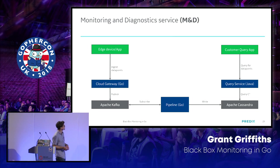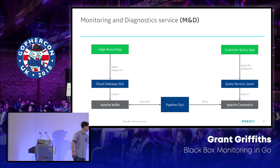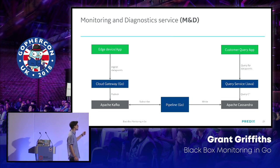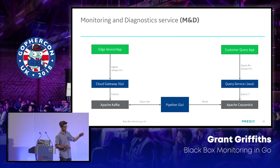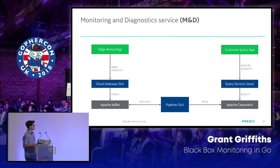The service architecture has a cloud gateway written in Go that sends messages to Apache Kafka. We subscribe to that topic with our pipeline application service, also written in Go, which writes to Cassandra. We also have a query service written in Java that queries data points from our Cassandra cluster. I'll go more in depth on this architecture in my talk tomorrow at 2 p.m. in this room.